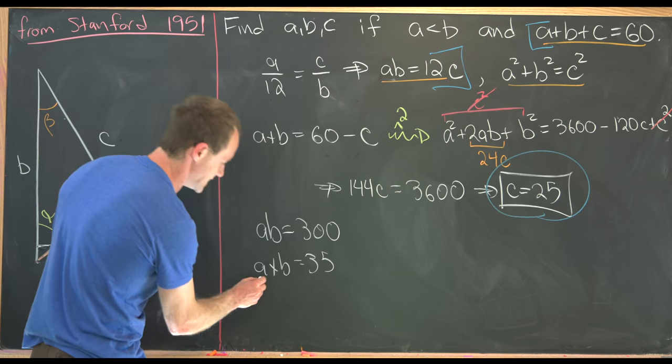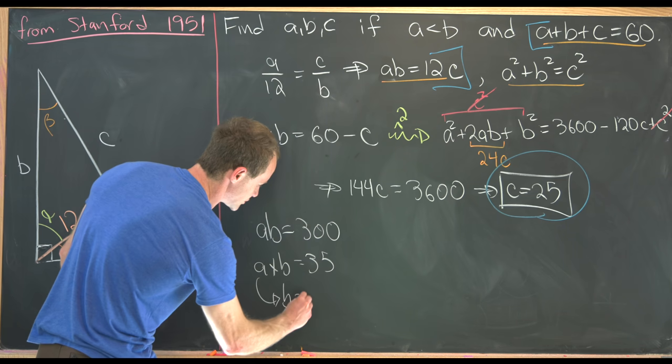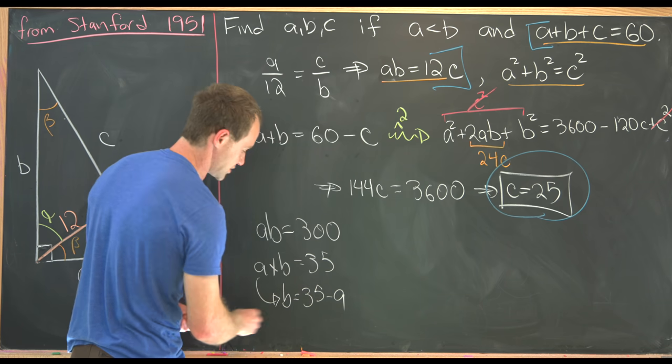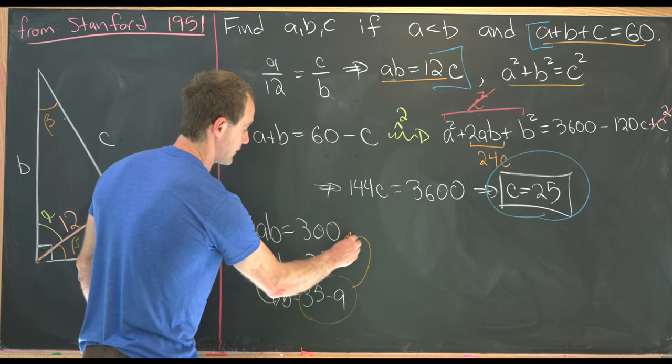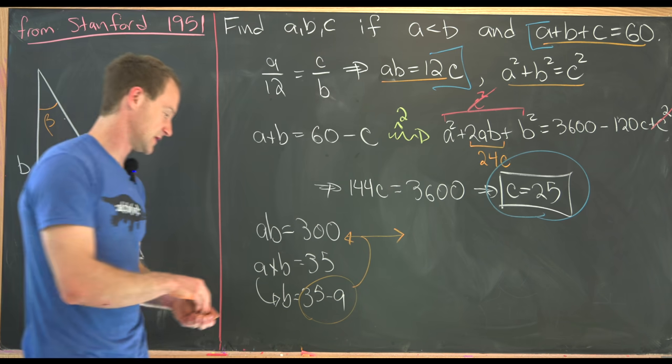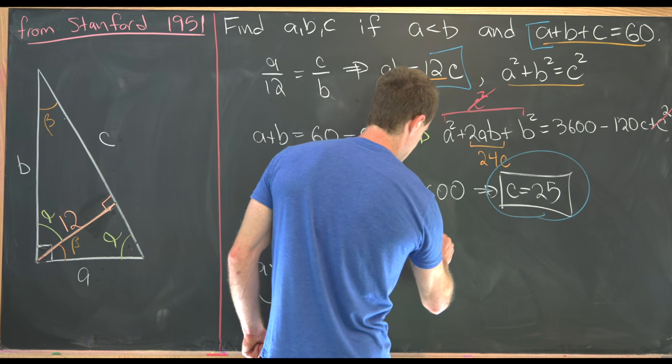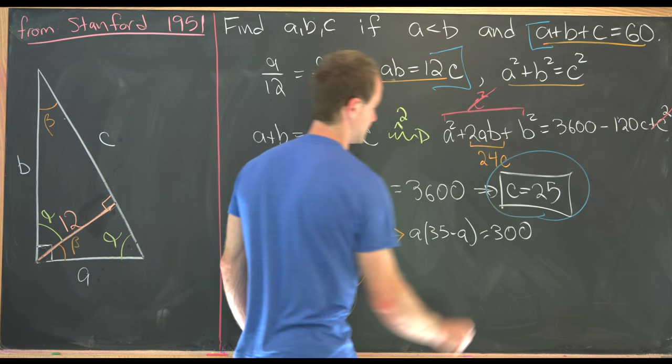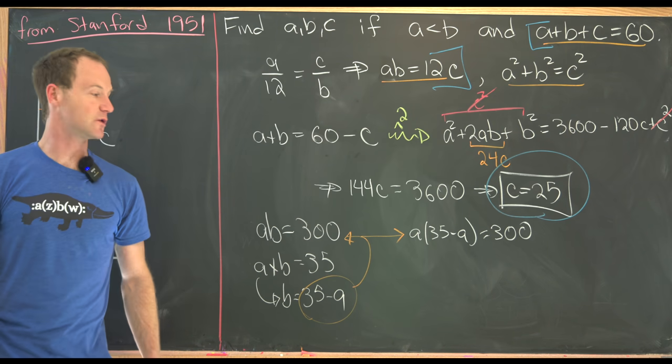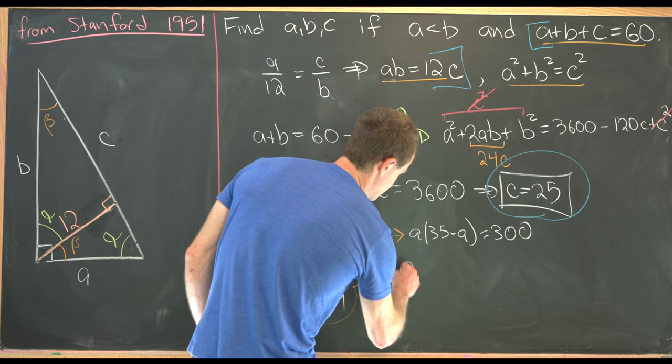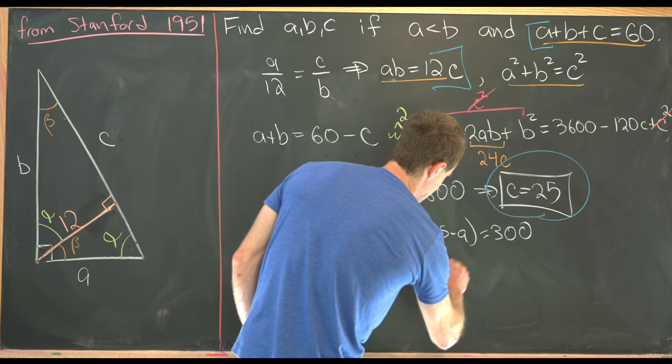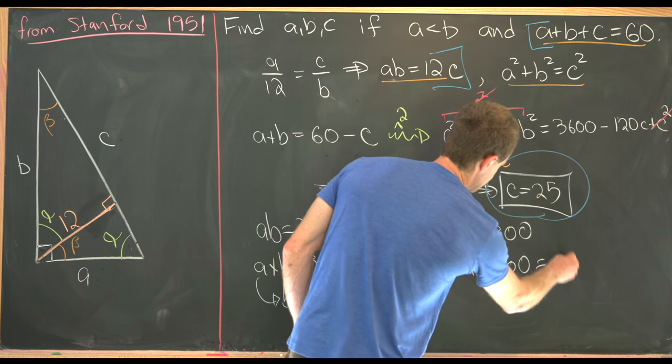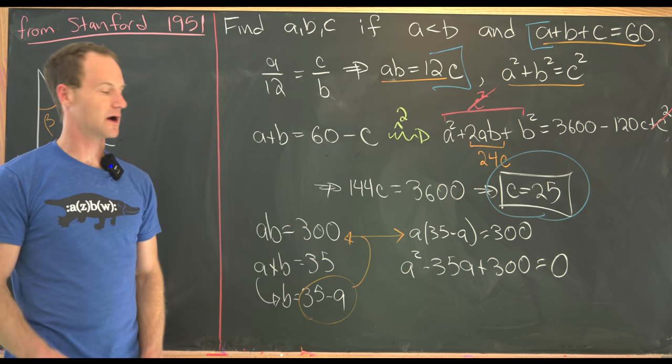But notice that that means that B is equal to 35 minus A. We can take that expression for B in terms of A, plug it up into this equation, and we'll see that we get A times 35 minus A is equal to 300, which is a nice quadratic equation in A. We can multiply it out and we'll see that we get A squared minus 35A plus 300 equals 0. So that's just by moving everything around.